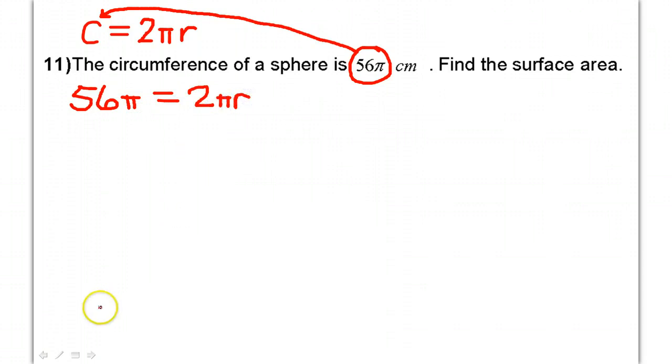All right, what am I going to do now? Sure, we might as well solve for r by dividing both sides by 2π. That gives me that the radius is 28.